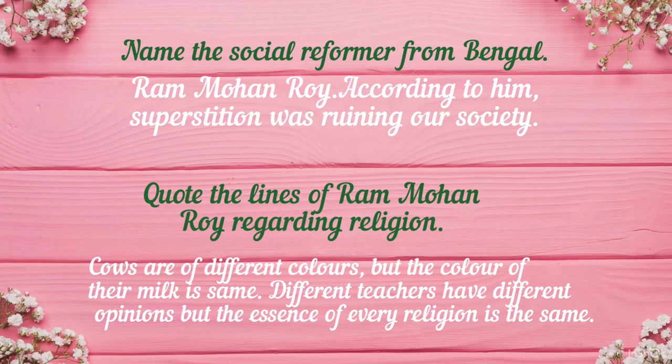Quote the lines of Ram Mohan Roy regarding religion. Ram Mohan Roy said these lines during a conversation with his wife Umma: 'Cows are of different colors but the color of their milk is the same. Different teachers have different opinions but the essence of every religion is the same.' With this he meant that there are many religions in our country but every religion has the same principle.